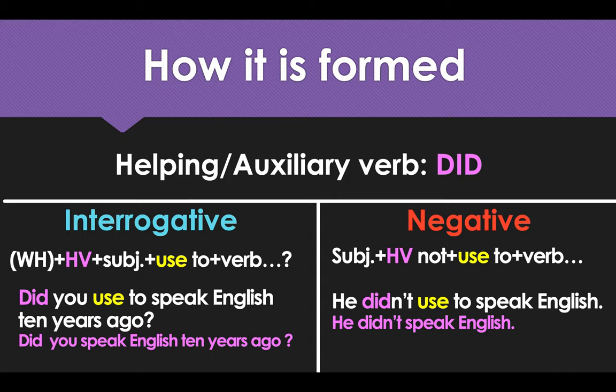Like in the example: 'Did you used to speak English 10 years ago?' It is the same thing as 'Did you speak English 10 years ago?' — it has the same meaning. Negative: subject, plus helping verb, plus 'not' because it's negative, plus 'use to' — note that there is no D in 'use' — plus verb. 'He didn't use to speak English' is the same as 'he didn't speak English'.